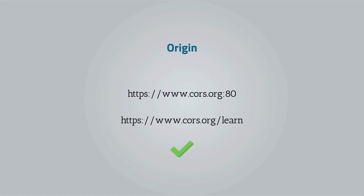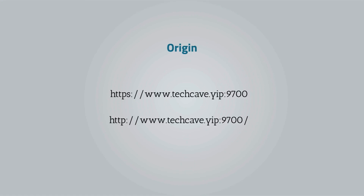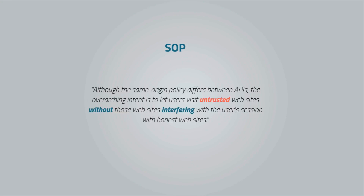Can you tell me if these are two different origins? What about these two? Now, there is no single implementation of SOP and it can take different forms. The W3C sums it up nicely: although the same origin policy differs between APIs, the overarching intent is to let users visit untrusted websites without those websites interfering with the user's session with honest websites. In other words, the browser cannot allow websites the user visits to interfere and take advantage of other websites' active sessions.